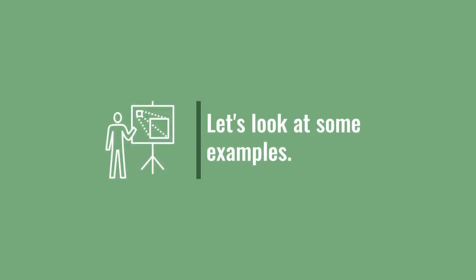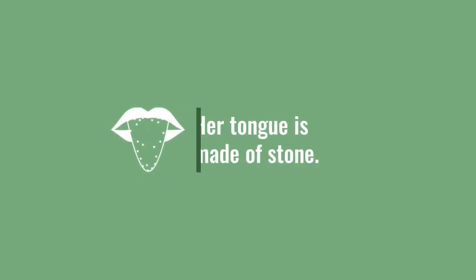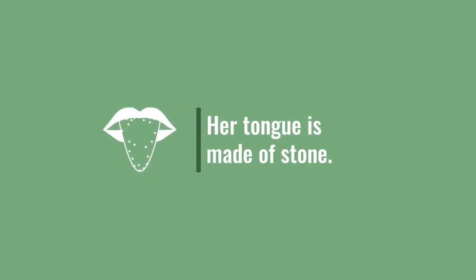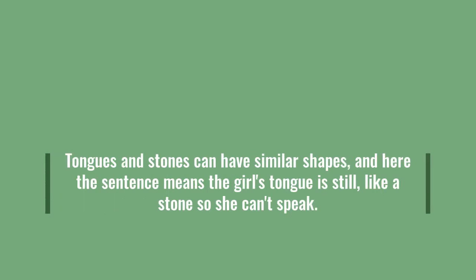Let's look at some examples. Tongues and stones can have similar shapes, and here the sentence means the girl's tongue is still, like a stone, so she can't speak.